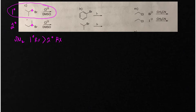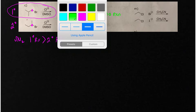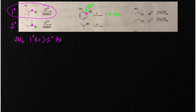In letter H, looking at this carbon, it is sp2 hybridized. There is never substitution on an sp2 hybridized carbon atom. So that one is going to be no reaction, and the other one is going to be faster.